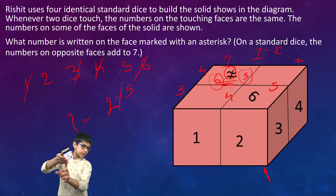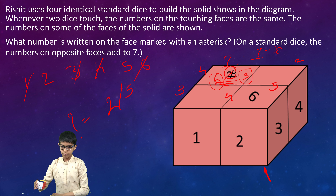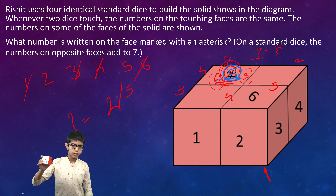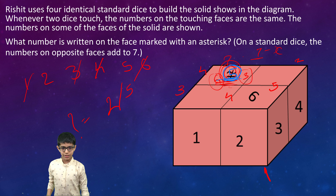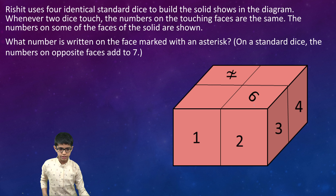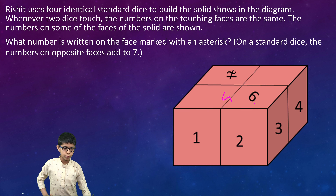Since two is at the bottom face, five would be on the upper face. So the top face has the value five. Now let's revise the opposite pairs simply: three has opposite four, two has opposite five, and six has opposite one.